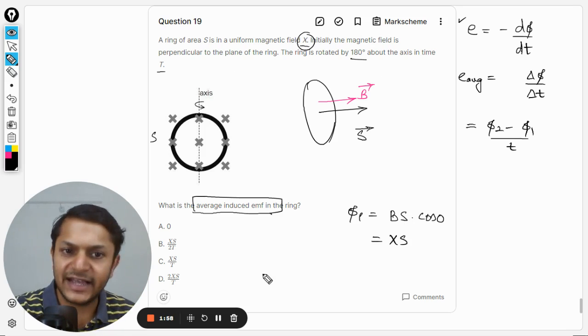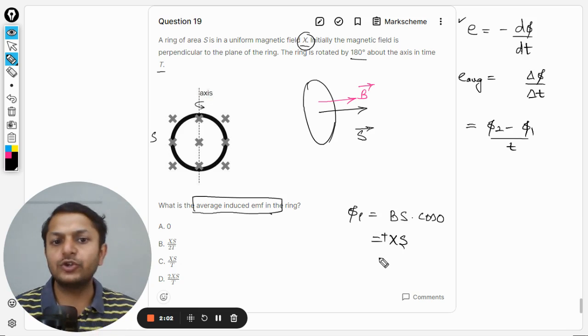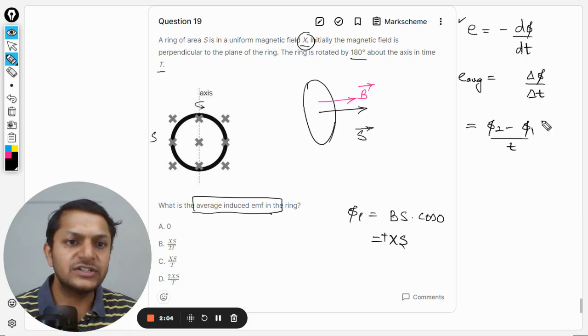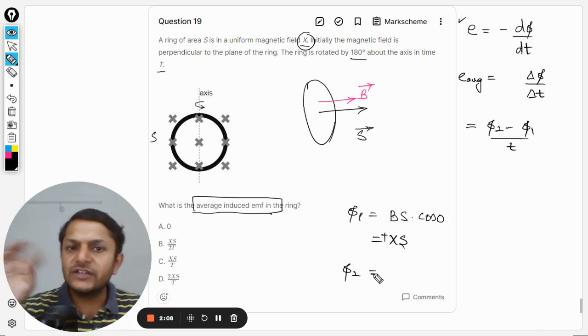Magnetic field B·S is the area into cos 0. By the way, the magnetic field is given as X, so we have to call it XS and cos 0 is 1, and we are taking it to be positive.